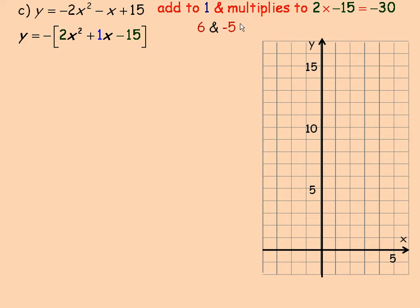And so remember what we do with the 6 and negative 5, we rewrite this with a 2x squared here, but we break the 1 down into 6x minus 5x. The minus 15 on the end remains the same.